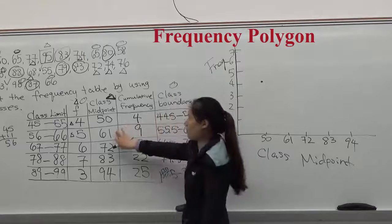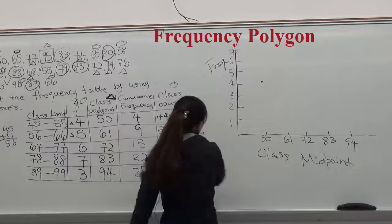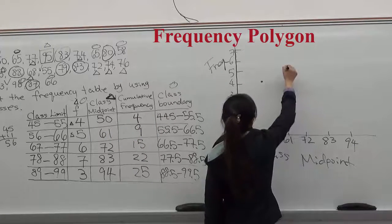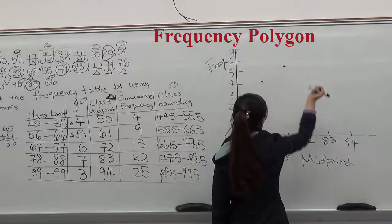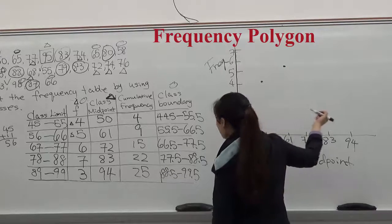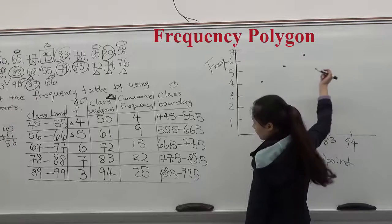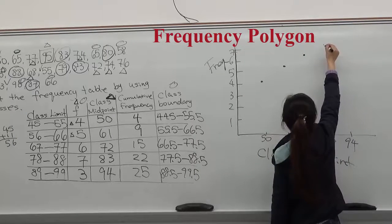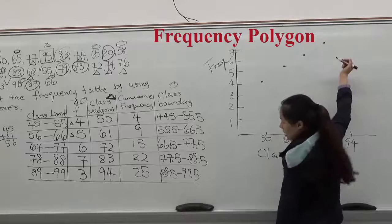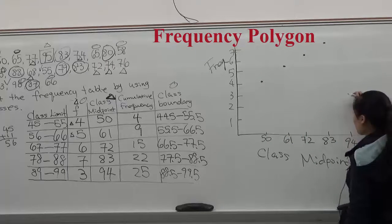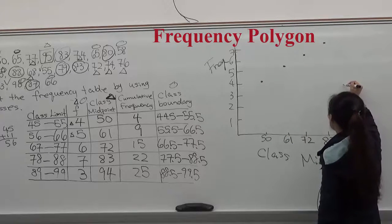Now it goes to 61, but the frequency is 5. 61, frequency is 5. 72, frequency is 6. 83, 7. And 94. The frequency is 3.